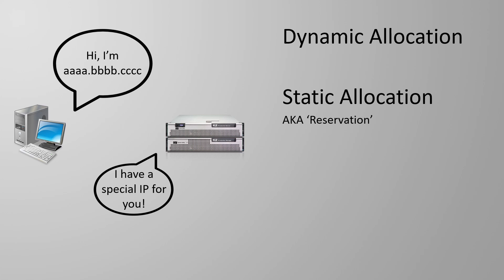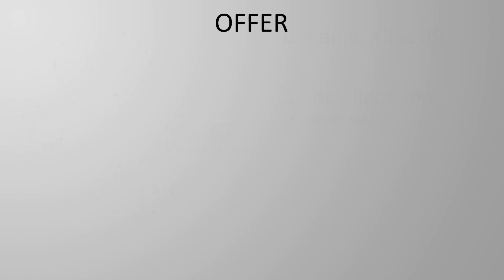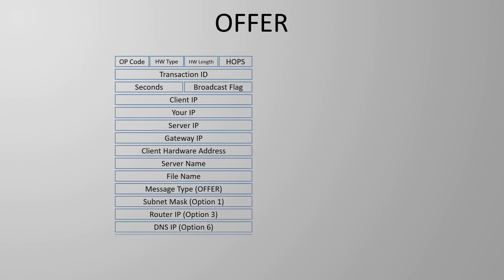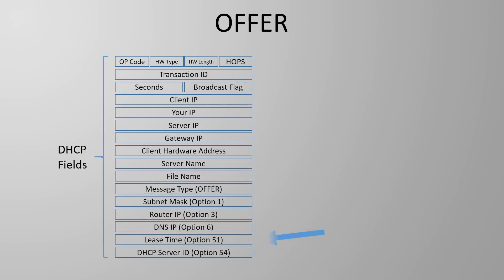There are a few cases where you might want to use static allocation, though they're not too common — see if you can think of some and put them in the comments. When a DHCP server sends the offer message it will also send a lease time, which is the time for which the IP address is valid. Windows servers offer a lease of eight days by default, while Cisco DHCP servers have a default of only one day. Of course we can set these values to whatever we need.